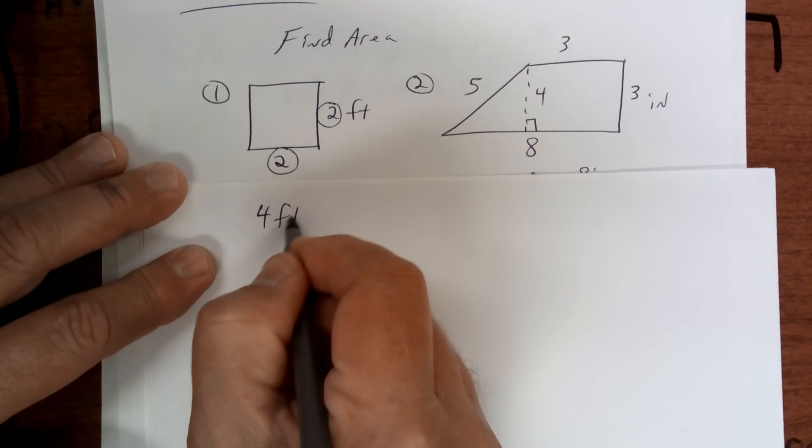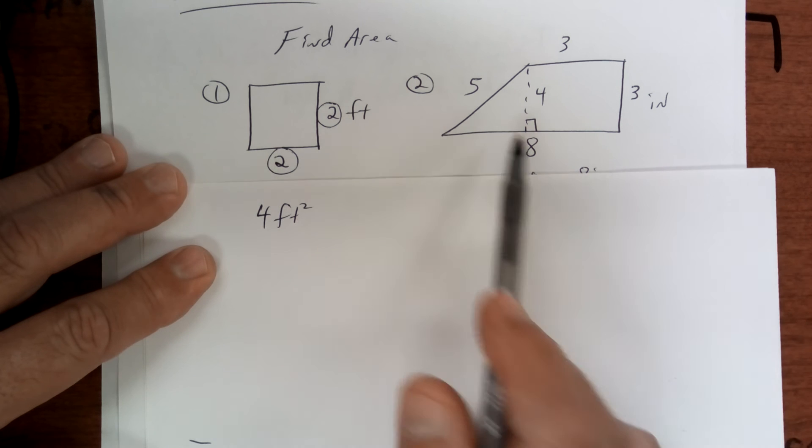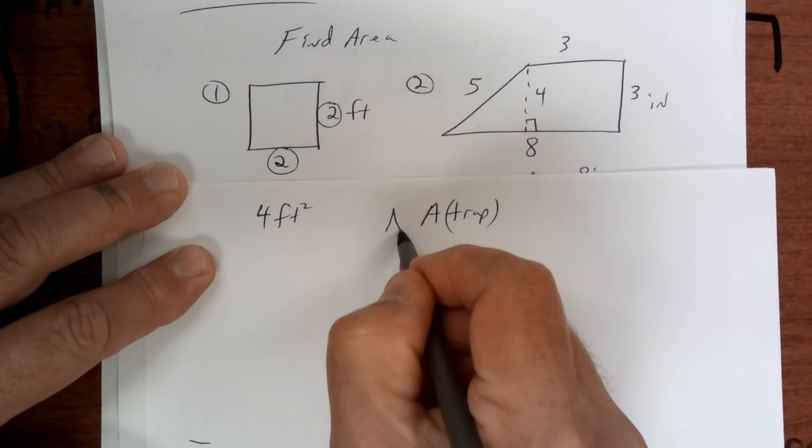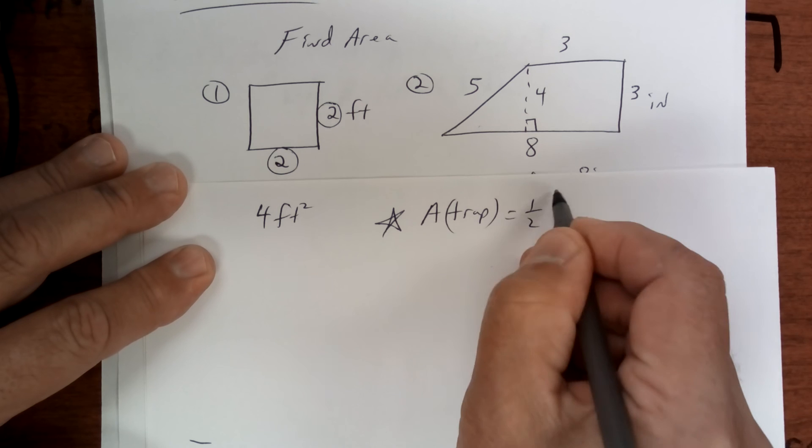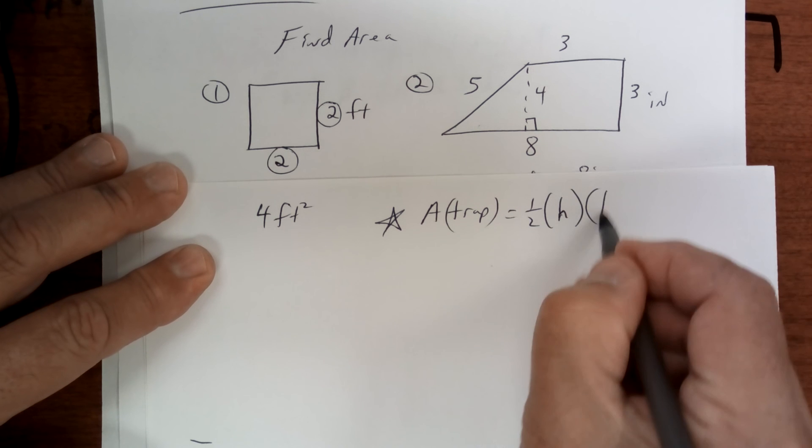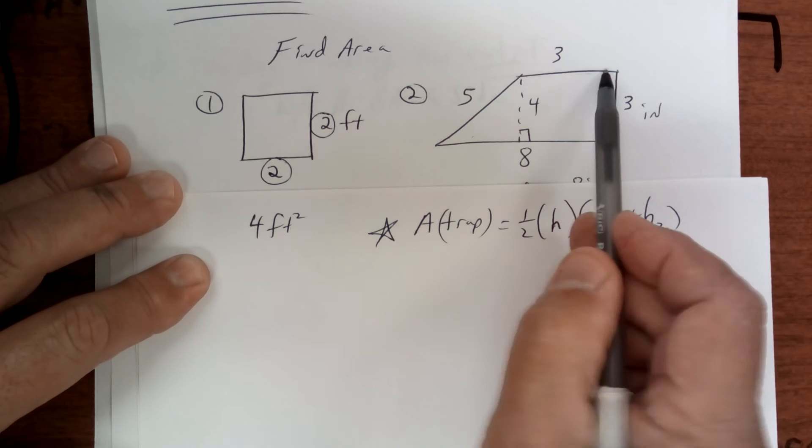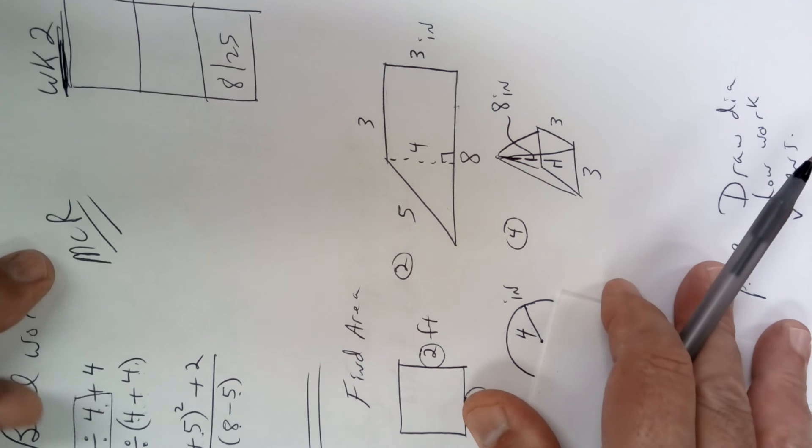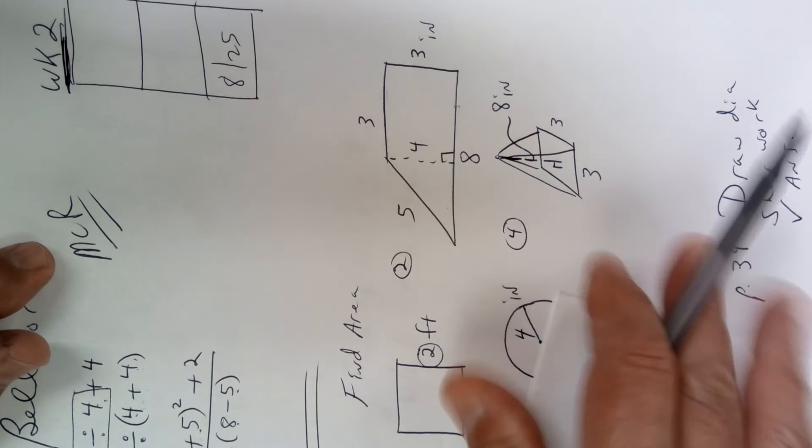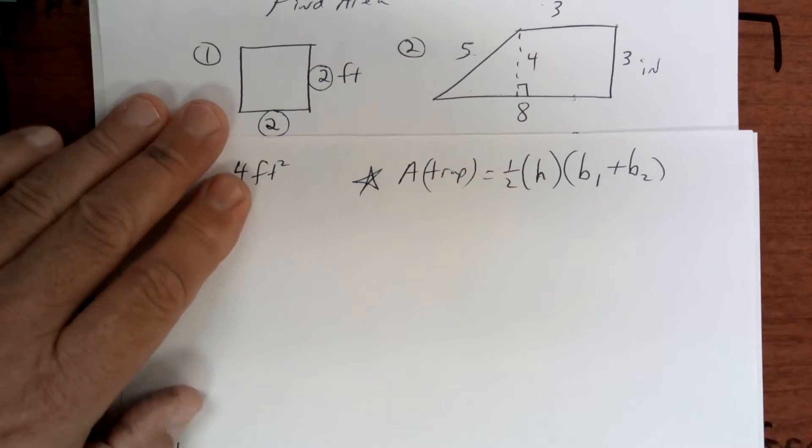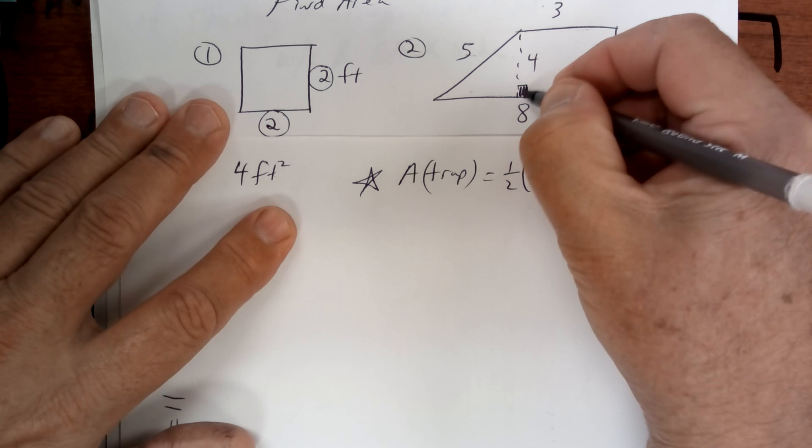This is called a trapezoid. So area of a trapezoid - put a star by this - is one half the height times the sum of the bases. The bases are the ones that are parallel. Some kids are like, 'Oh, it's the top and bottom.' Sometimes it is, but sometimes they turn the page like this, and if they turn the page, then your bases are these, not those, because those are not parallel.